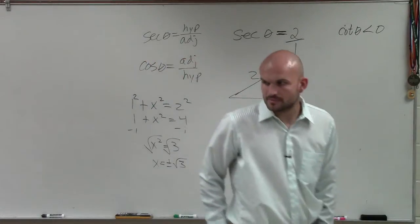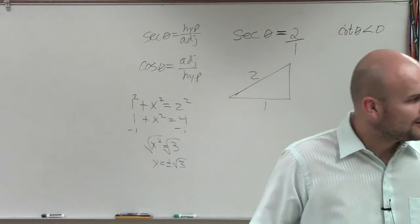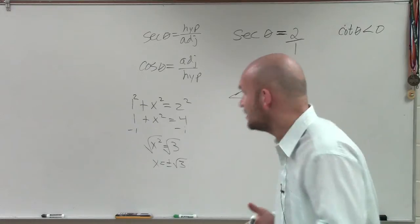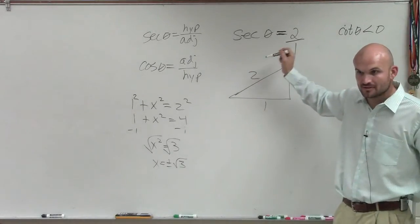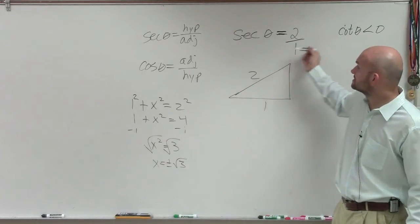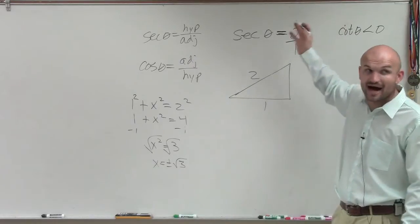Now here's where we come into a problem. Because remember, ladies and gentlemen, whenever you introduce the square root, you have to include a positive and a negative. Well, am I taking the square root to find the hypotenuse? No. So I know this value represents the opposite side. That could be positive or negative.